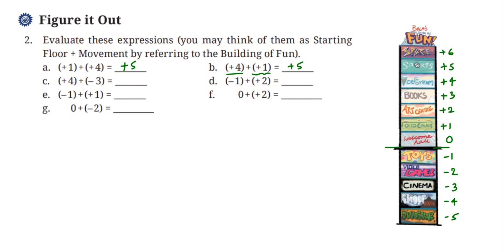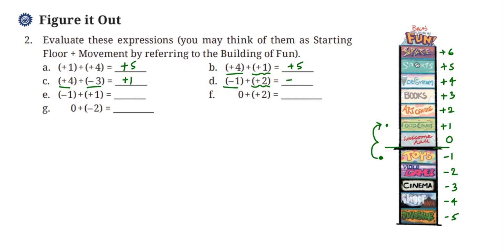Third one: we have plus four minus three. The starting point is ice cream and we go three floors down — one, two, three — we reach food court, which is the first floor, plus one. Then: minus one plus two. The starting point is toys, minus one, and from there we go two floors up — one, two — we reach food court. So the answer is plus one.